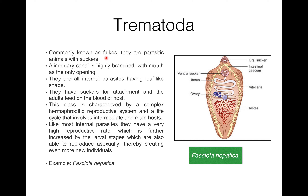The life cycle involves intermediate and main hosts. Three pairs of longitudinal nerve cords are present in Trematoda. They are mostly monoecious. Development is direct in ectoparasites but indirect in endoparasites with alternation of hosts. Like most internal parasites, they have a very high reproductive rate, which is further increased by larval stages that can also reproduce asexually, creating even more new individuals.